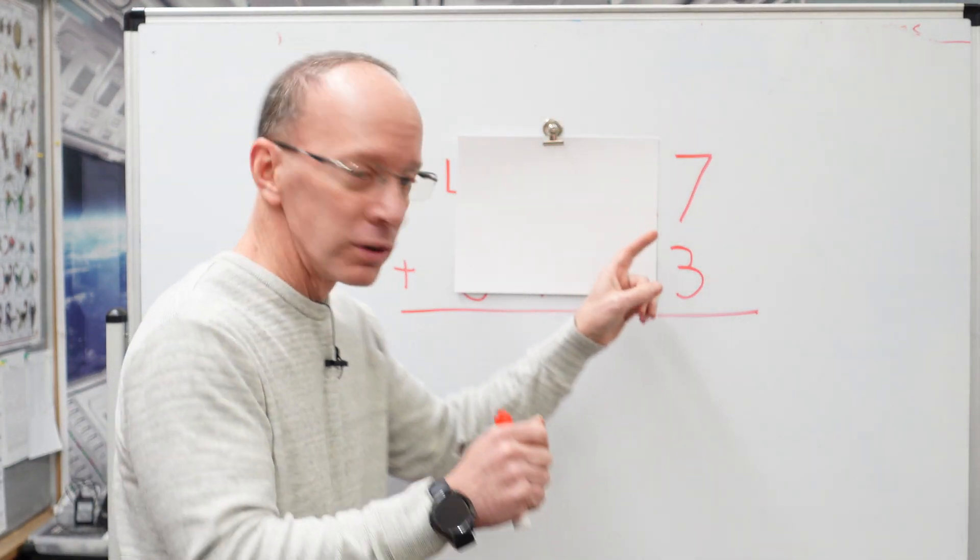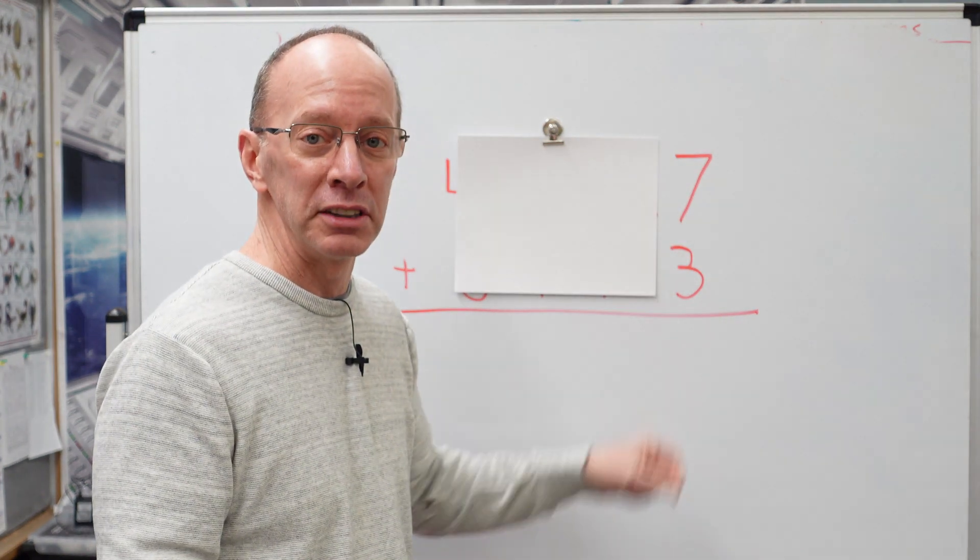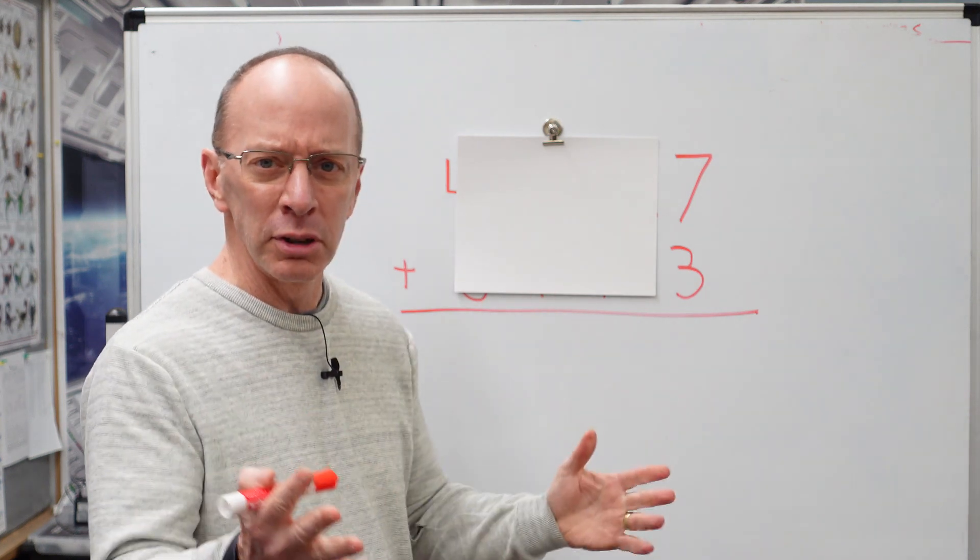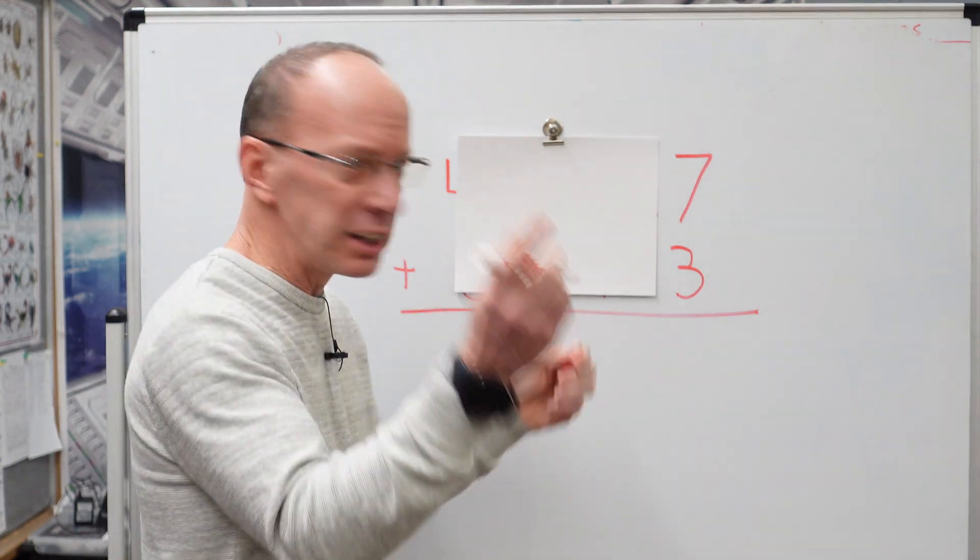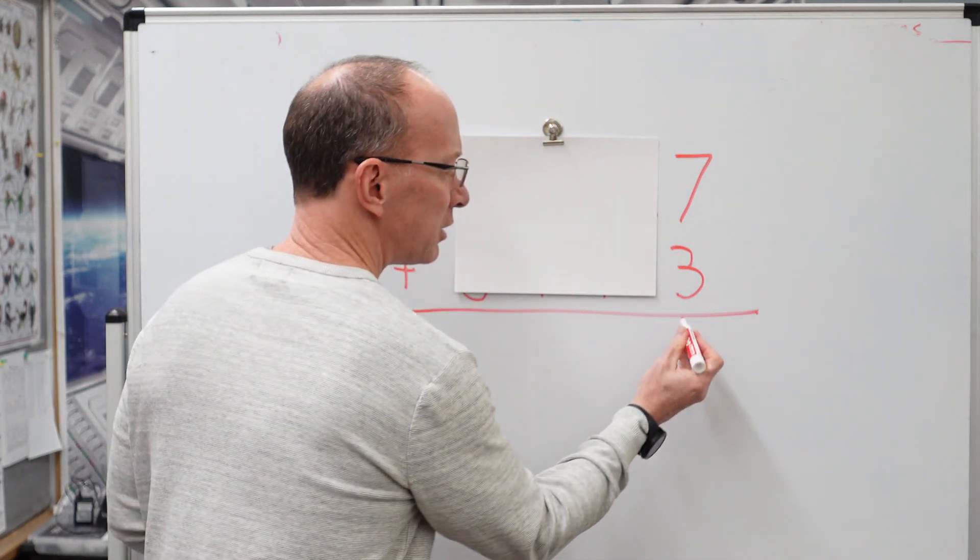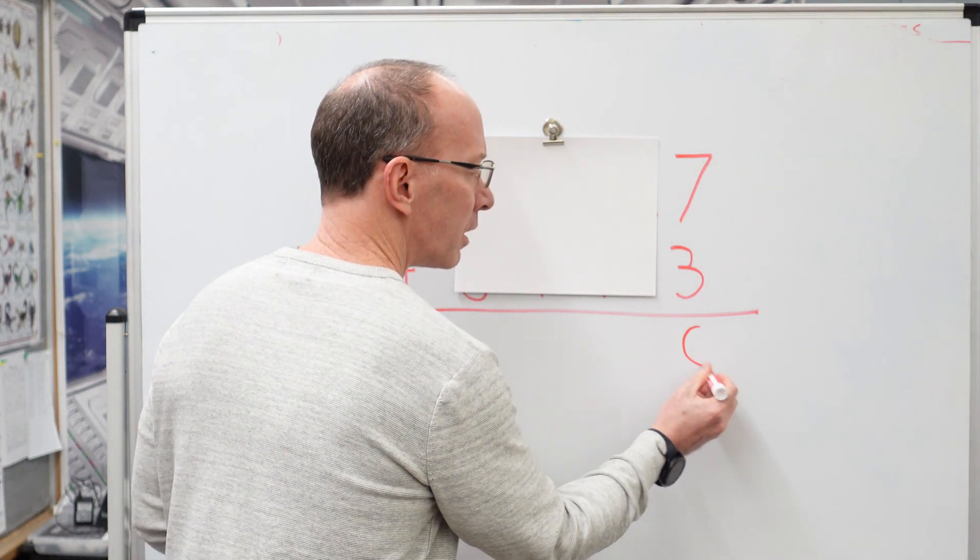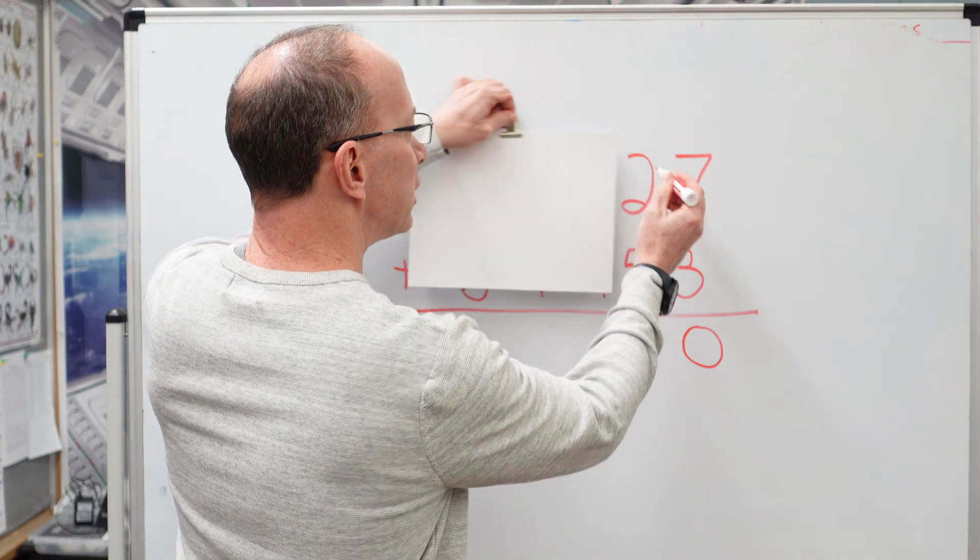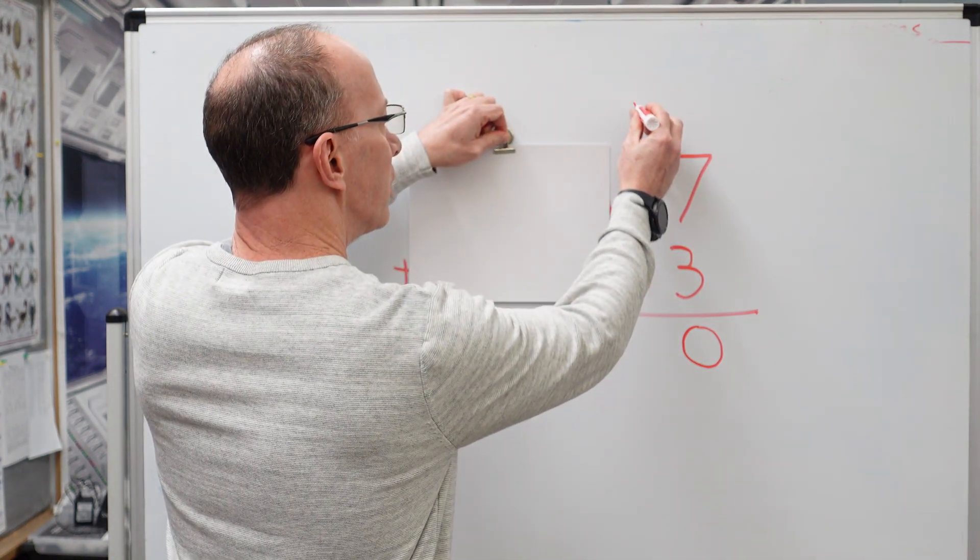All right. So first of all, we add the ones. Seven plus three, seven, eight, nine, ten. All right. So where do we put the numbers at? We take the ten, but the ten is one zero. We put that zero right here and we're going to put that one right over in the tens spot right here, right there.